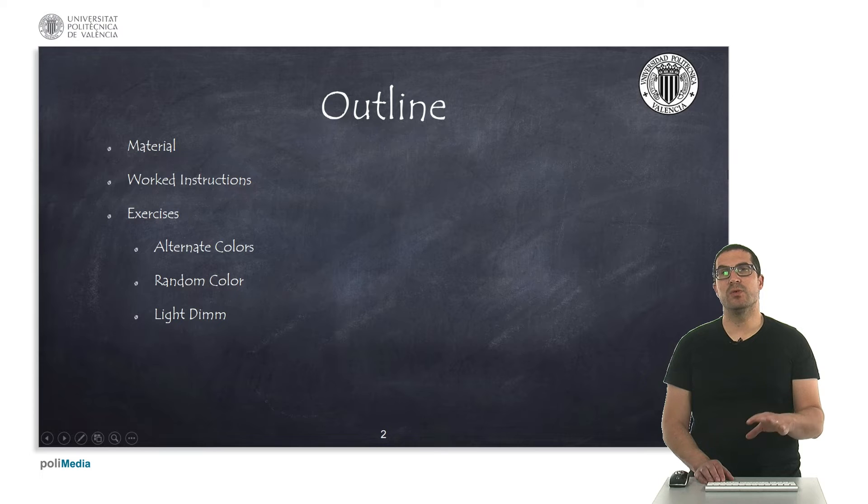The first one, we're going to change the color of the RGB LED. Then, we will show a random color. And finally, in the third example, I will explain how to regulate the level of intensity, the light intensity of an LED. We call it here the light dimm.